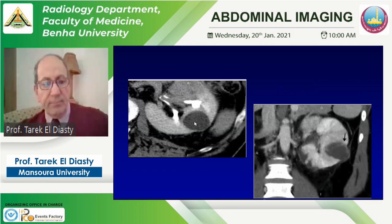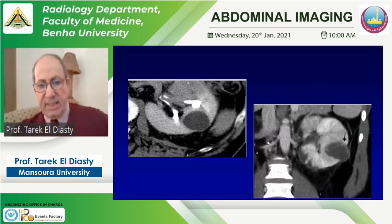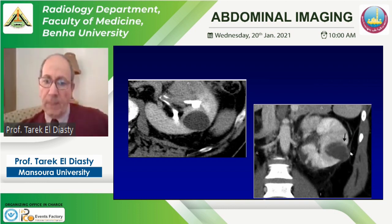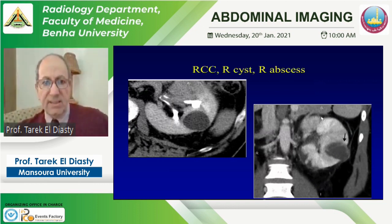This example demonstrates the value of post-contrast delayed phase imaging. An anteriorly enhancing lesion in the anterior cortex — renal cell carcinoma — alongside non-enhancing renal cysts. In another patient, there is a minimally enhancing lesion with peripheral enhancement and thickening of the renal fascia — consistent with a renal abscess. These show different enhancement characteristics for renal cell carcinoma, renal cysts, and renal abscess.